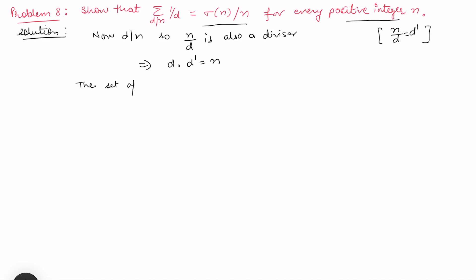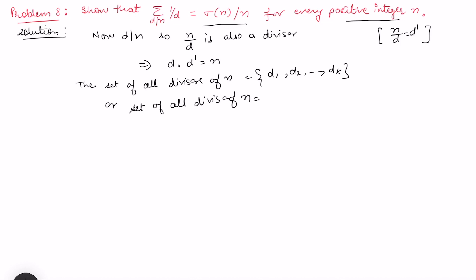We consider the set of all divisors of n, and let's say this divisor set is {d₁, d₂, ..., d_k}. If d₁ is one divisor, the corresponding divisor is n/d₁; for d₂ it would be n/d₂, and so on up to n/d_k. This is also a set of divisors — in fact these two sets are equal, just written in a different format.